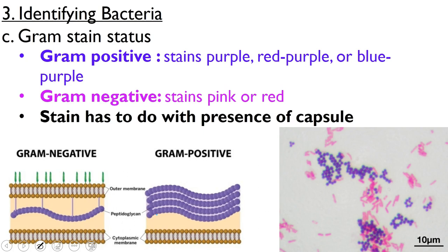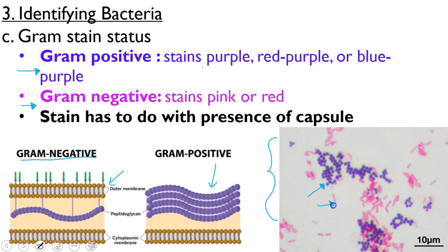One other way we can identify our bacteria is by their gram stain status. Bacteria are too small and lack color to see clearly under the microscope, so we stain them with something called gram stain. If it's gram positive, it stains purple or bluish purple. If it's gram negative, it stains pink or red. This has to do with the presence of a capsule — on a gram negative bacteria, the capsule blocks more of the dye, so they end up pink. For gram positive bacteria, there is no capsule, so all the purple dye binds to the cell wall. For example, the purple clusters of circles in a microscope view would be staphylococcus, and the pink pairs of rod-shaped bacteria would be a diplobacillus.